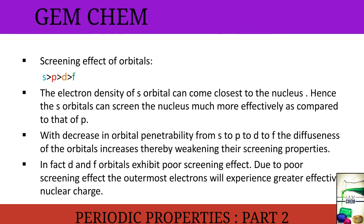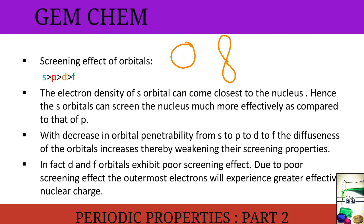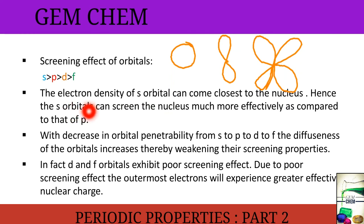The screening effect of orbitals: for the s orbital it is maximum, as its shape is completely spherical. For p it is less than s, then d, then f. The shapes are: s is spherical, p is dumbbell, d is double dumbbell, and f is a highly complex, diffused structure. The electron density of the s orbital can come closest to the nucleus, so the s orbital screens the nucleus most effectively.